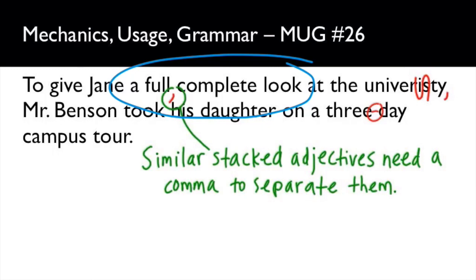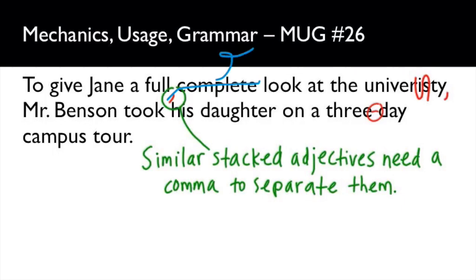That being said, I really hate that phrase. I'm a big fan of lack of redundancy — I want you to just get to the point in your writing. So if I saw this in a student's paper, I actually would just have them take out one of the adjectives altogether, because you don't need both. A full look is a complete look. But it's there to illustrate the grammar principle, so you can keep it or strike "complete" — either way is fine. Also, "university" is misspelled; just switch the order of the S and I.